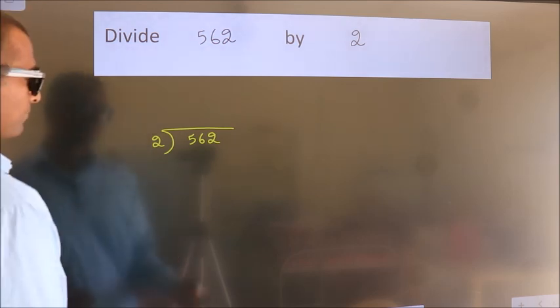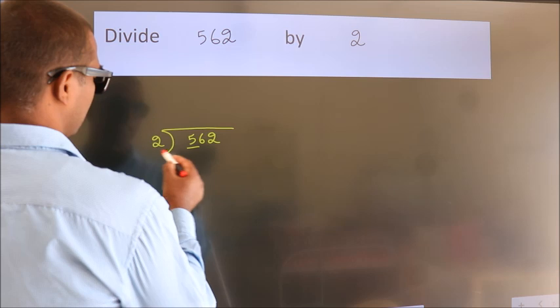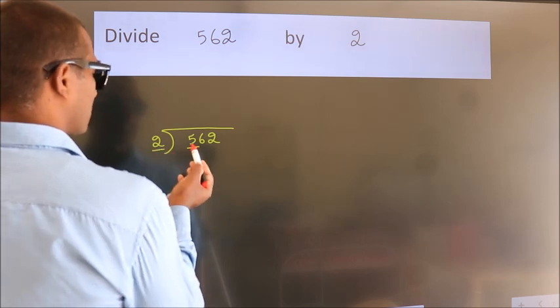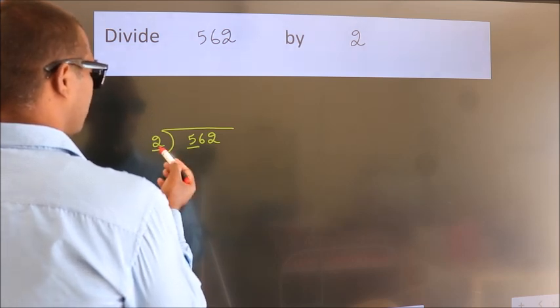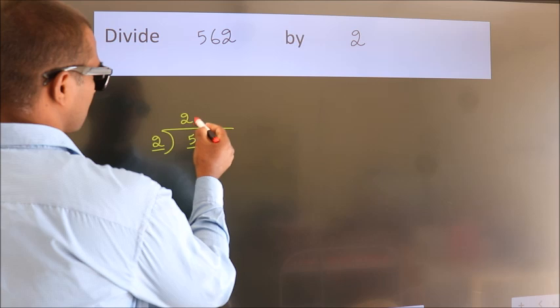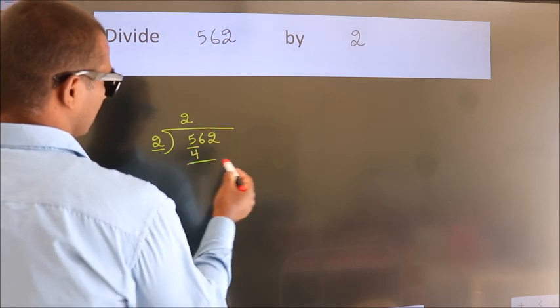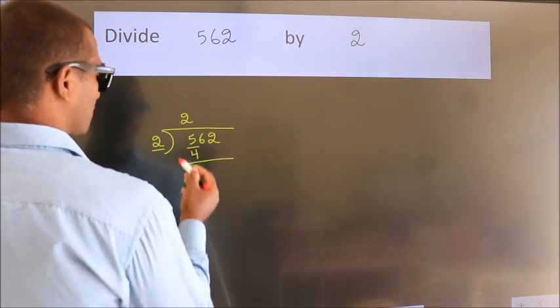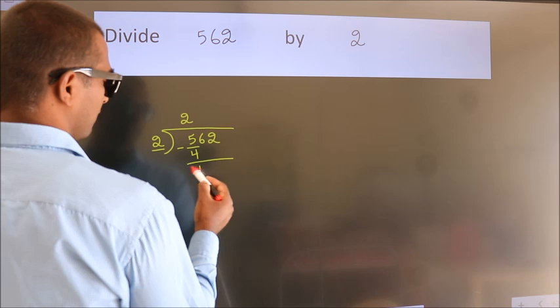Next, here we have 5, here 2. A number close to 5 in 2 table is 2 2's, 4. Now, we should subtract. We get 1.